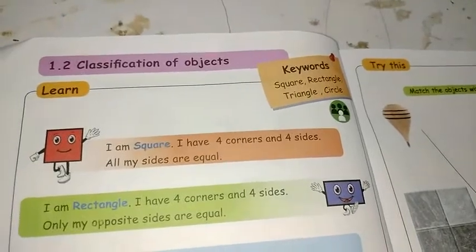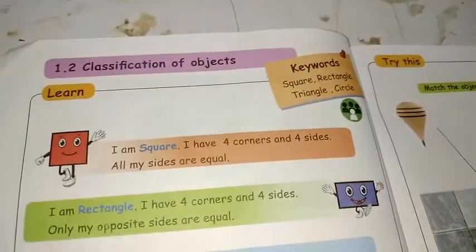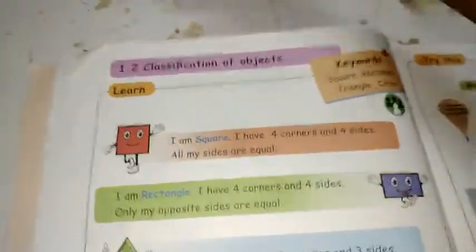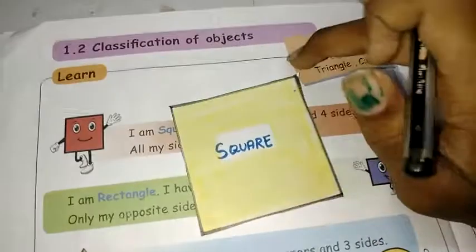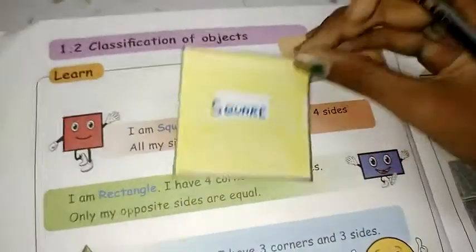I am square. I have four corners and four sides. All my sides are equal. Yes, I square have four sides and four corners, and they are all equal.